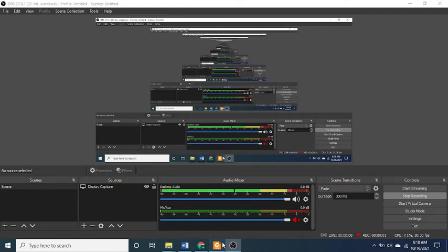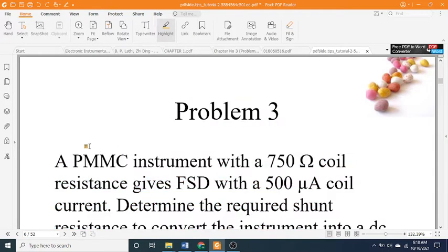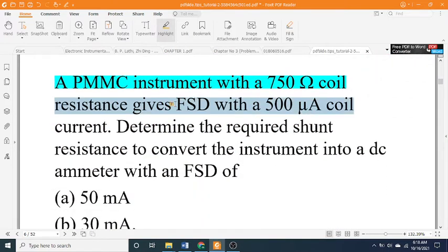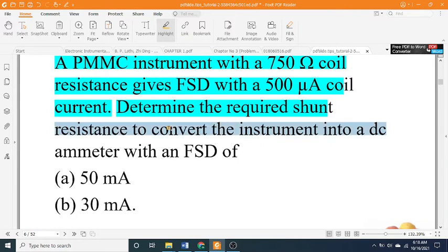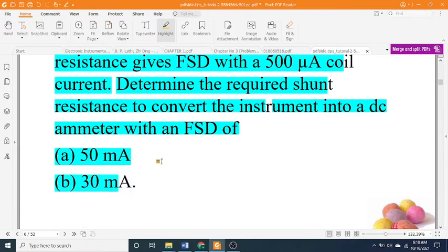Problem 3: A PMMC instrument with a 750 ohm coil resistance gives full scale deflection with a 500 microamp coil current. Determine the required shunt resistance to convert the instrument into a DC ammeter with an FSD of (a) 50 milliamps and (b) 30 milliamps.